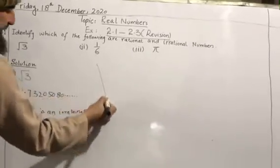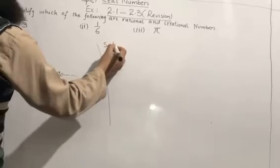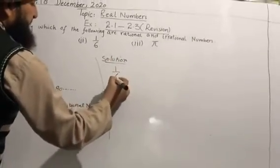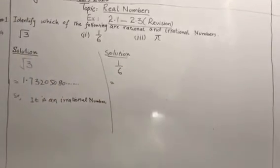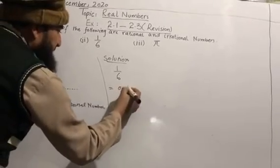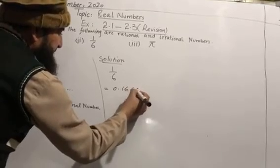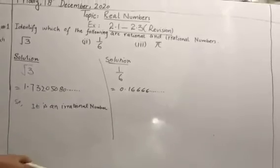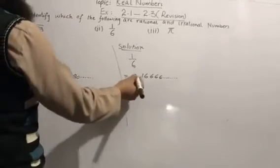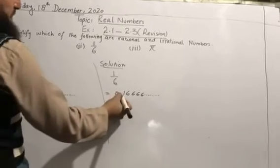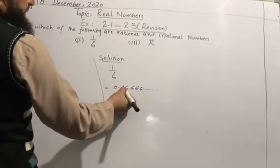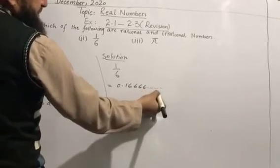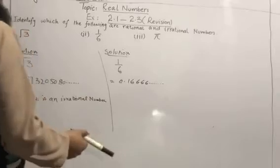Now we solve the second part: 1/6. If we divide 1 by 6, the result is 0.16666... and so on. After dividing the fraction, we have a decimal where, after the first digit, the number 6 is repeating again and again — it shows it's a recurring and non-terminating number.